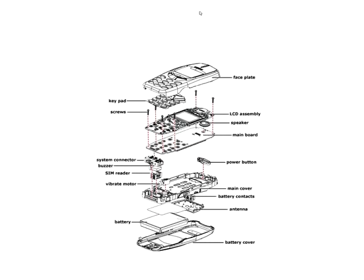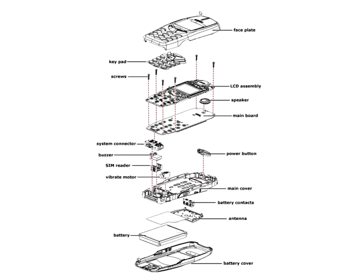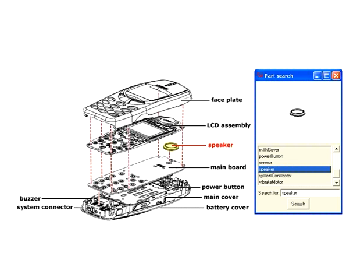This phone contains lots of internal structure. Let's say we want to find a particular part, like this speaker. Instead of visually searching through the diagram, our interface allows the viewer to do a simple text search, as shown here.